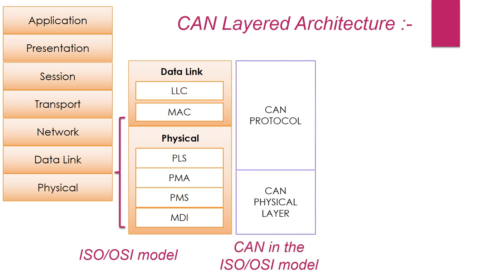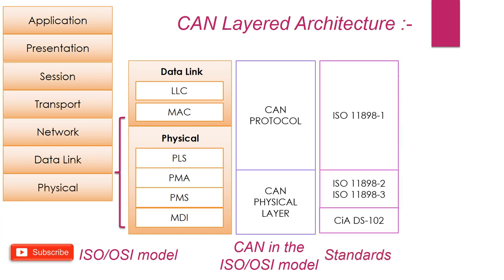CAN specification defines CAN protocol and CAN physical layer, which are defined in CAN standard ISO 11898. ISO 11898 has three parts: Part 1 covers the specification for data link layer and physical signaling, while Parts 2 and 3 cover the CAN physical layer for high-speed and low-speed CAN respectively.